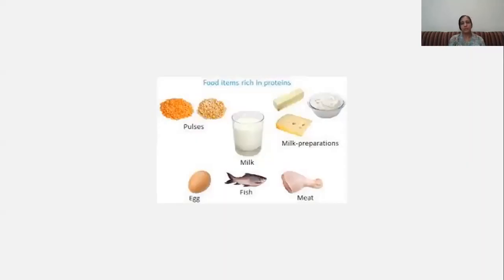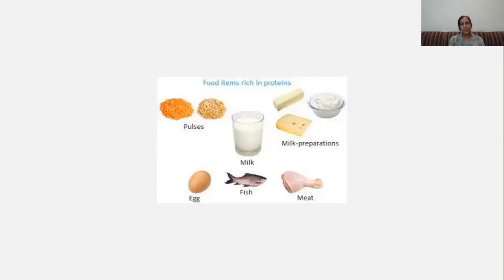Now, children, I hope you are able to understand everything I have explained in this video. With the help of all this, you are able to understand what you must consume in the form of carbohydrates, fats and proteins, so that you can build up a healthy body. Try to follow all these things and add a good amount of carbohydrates and proteins in your diet, and less amount of fats. That's all for the day, children. Thank you, have a nice day. Bye bye for now.